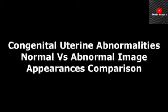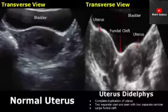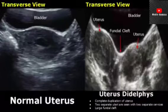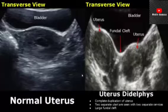This video is about congenital uterine abnormalities on ultrasound. Congenital uterine abnormalities occur during embryonic life and are types of Mullerian duct anomalies.